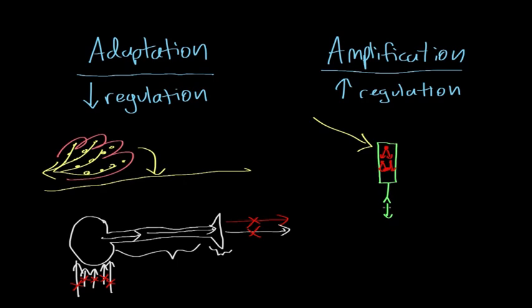When this cell fires an action potential, it might be connected to maybe two cells. And these two cells then also fire an action potential to two more, and so on and so forth. By the time the signal that this cell started reaches the brain, it's been amplified. And so this is basically amplification in a nutshell.